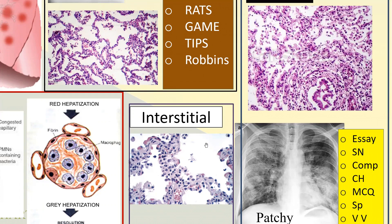The third type is Interstitial Pneumonia. Interstitial means it involves the intervening space. There are cells such as lymphocytes and plasma cells. It normally occurs in viral pneumonia or mycoplasma pneumonia. Here the alveolar spaces are clear. This is mentioned for completeness. There are different types of pneumonia — lobar, bronchopneumonia, interstitial — and based on etiology there can be aspiration, bacterial, viral, or fungal pneumonia.